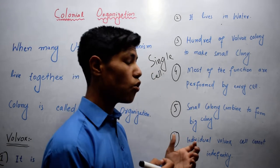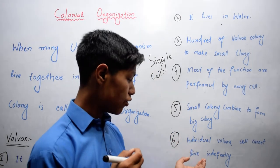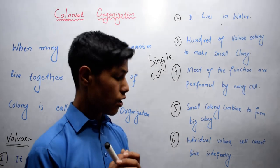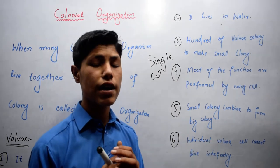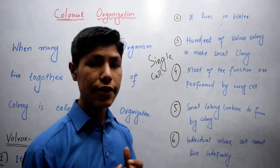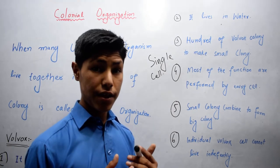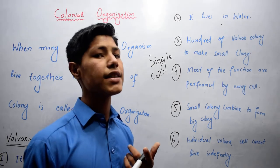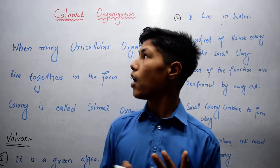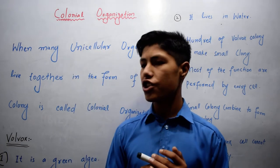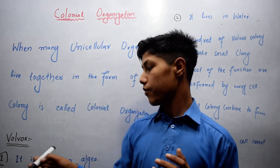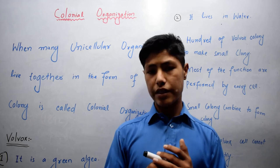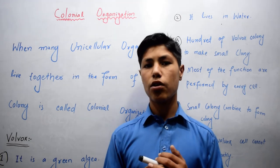And the last one is a very important point that individual Volvox cannot live indefinitely. Why? Because they depend on each other for food, water, etc. So this was all about colonial organization explained with the help of this example, which is Volvox. Thanks for watching.